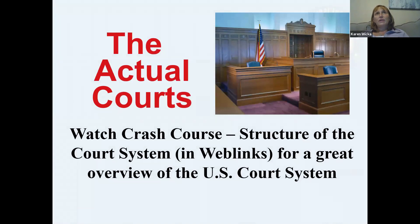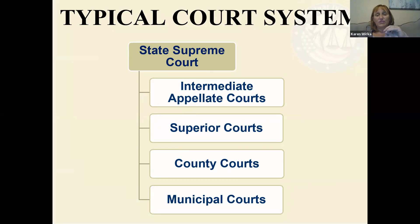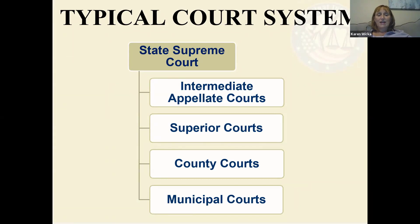Now let's talk about the actual courts. There is a posted video called Crash Course: Structure of the Courts for a great overview. Court systems traditionally have a three-tiered structure: lower courts which are county or municipal (city, town, and village courts), then superior courts, then a first appellate court, and then the highest state court. So it's generally lower courts, one appellate court, and the highest court.